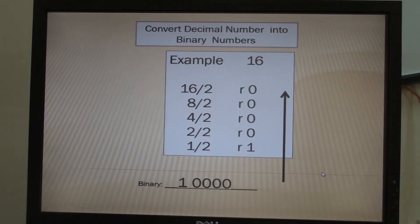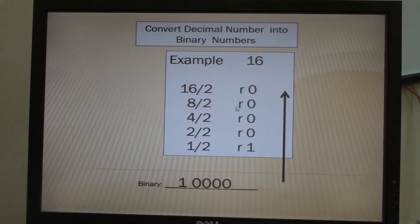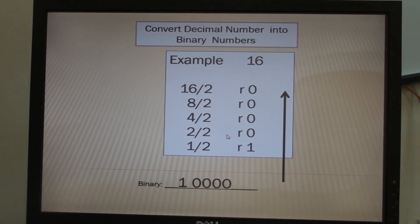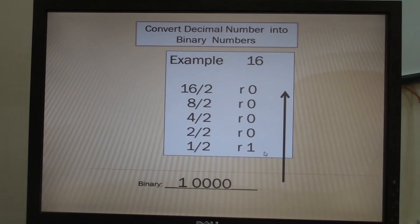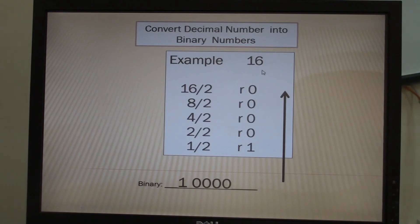Let us convert decimal number 16 into binary. 16 divided by 2 is 8, no remainder. 8 divided by 2 is 4, remainder 0. 4 divided by 2 is 2, remainder 0. Then 1 divided by 2 is 0.5, but instead rewrite as remainder 1. Write the answer from down to the top: 1, 0, 0, 0, 0. The equivalent of decimal 16 in binary is 10000.